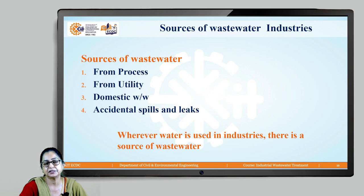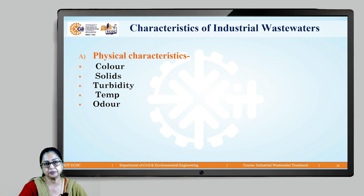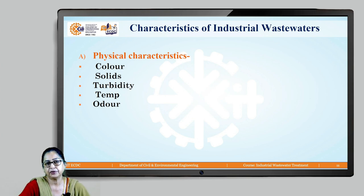Wherever water is used, there is likely a source of wastewater, so the sources of wastewater are the same as the places where water is used. Now let's look at the characteristics of industrial wastewater.